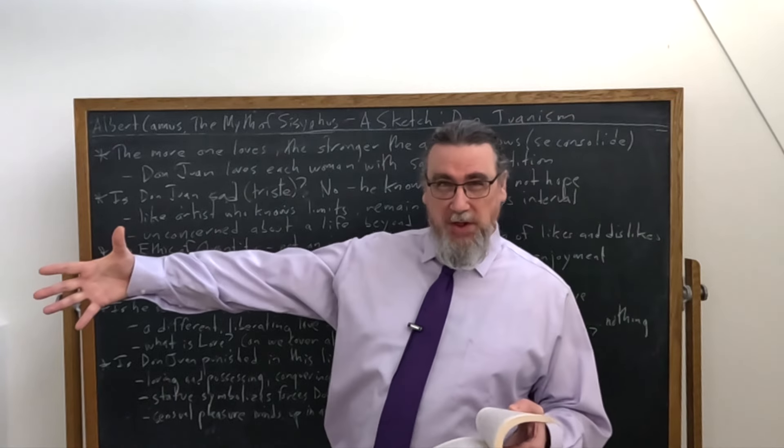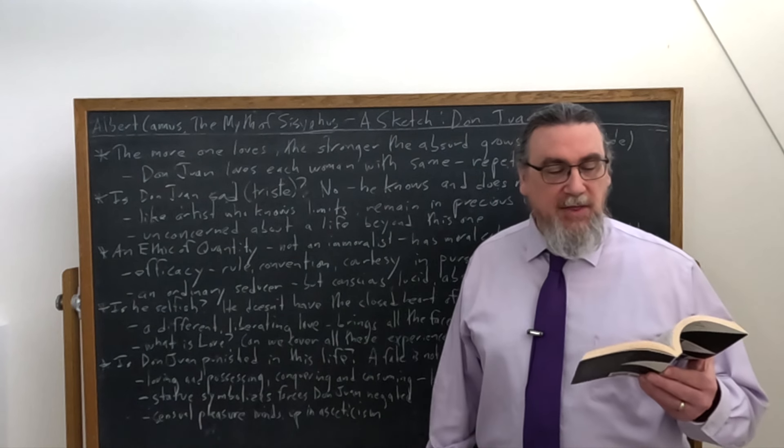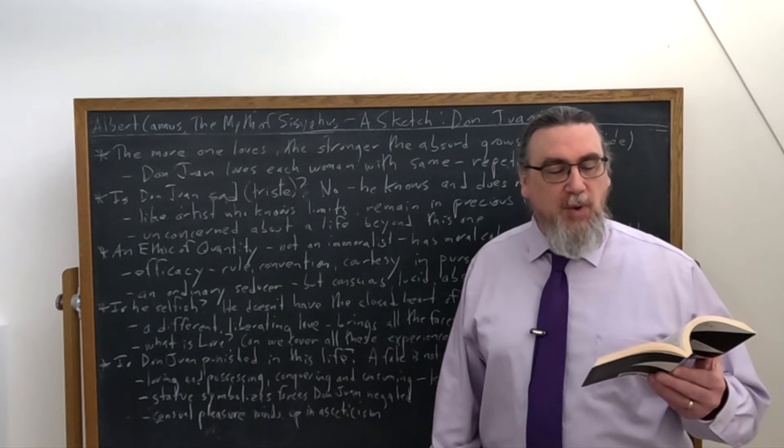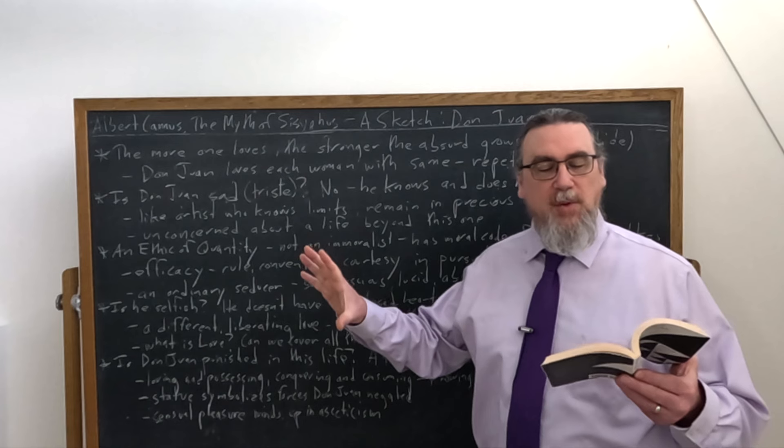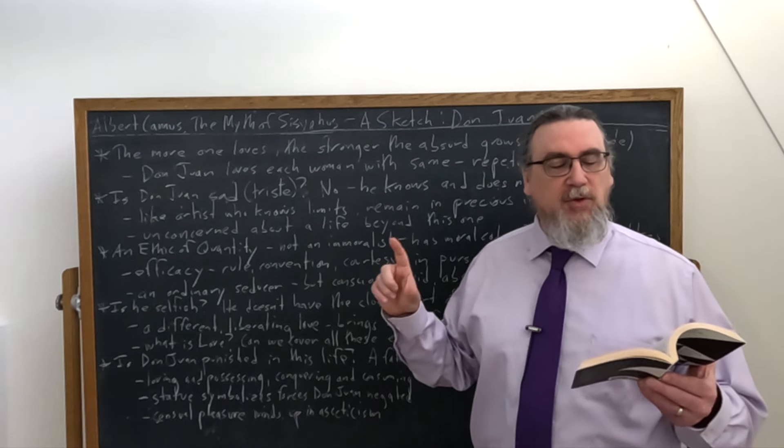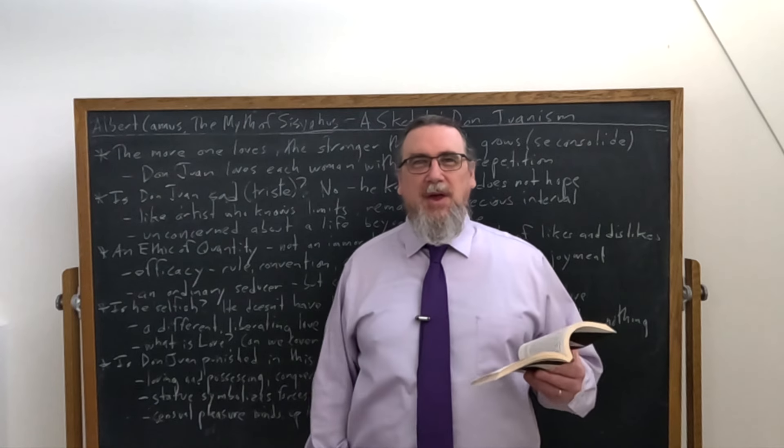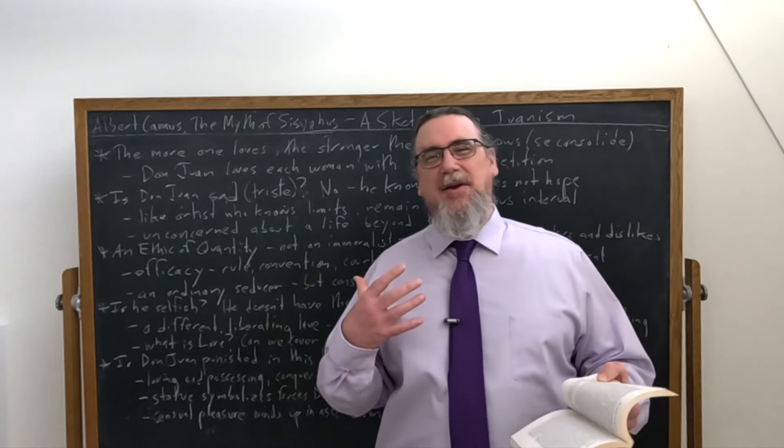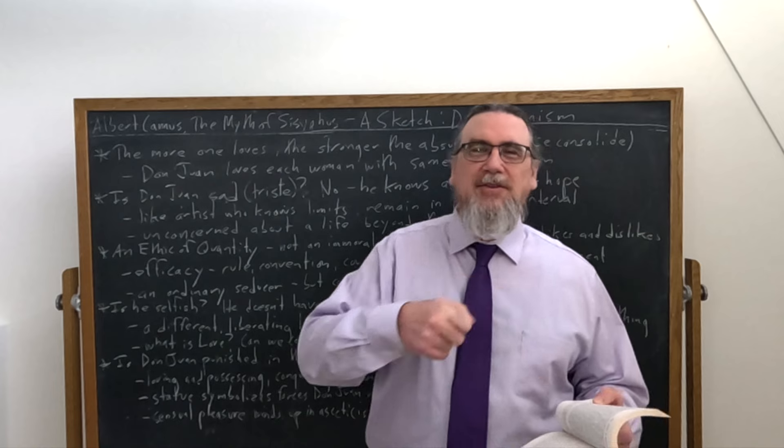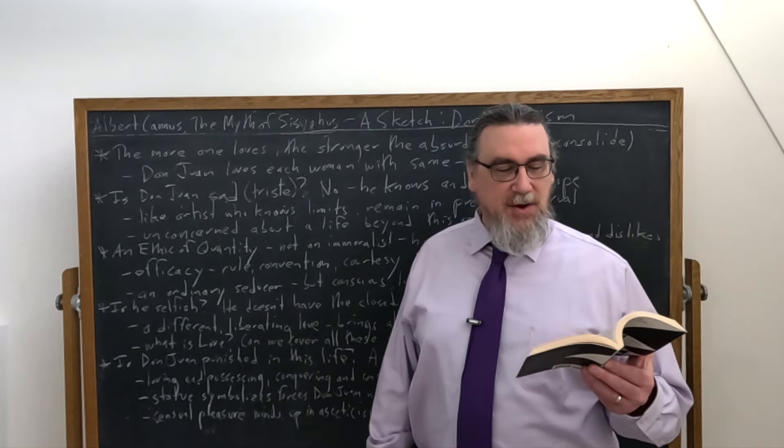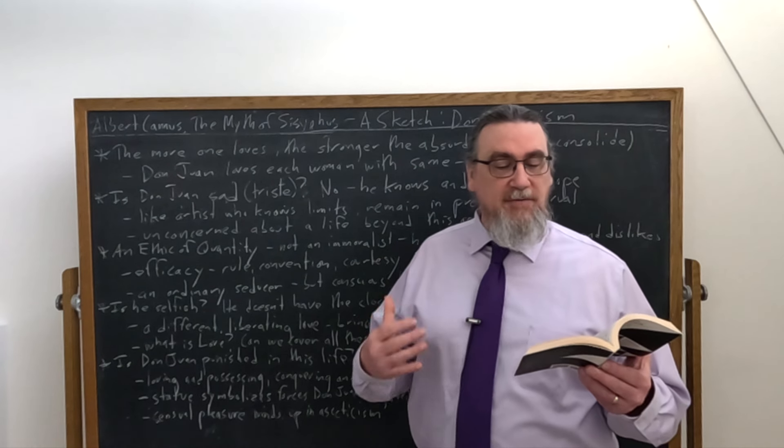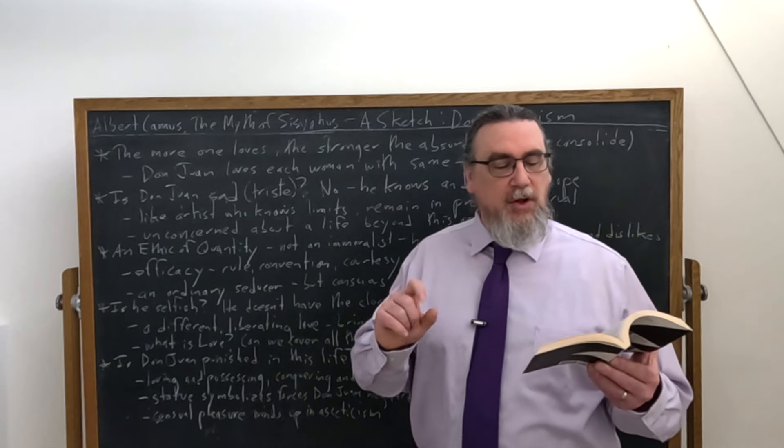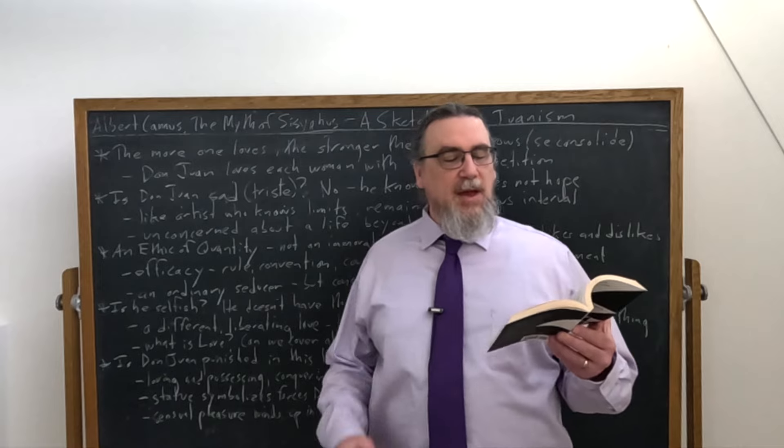And then he talks about people who do commit themselves to one great love in their life. So he talks about the cases of a mother or a passionate wife. And he says, there's actually selfishness there as well. They seem to be totally devoted to the other, but that's not really the case. He says that Don Juan knows just as well that those who turn away from all personal life through a great love enrich themselves, perhaps, but certainly impoverish those their love has chosen. Sacrificing yourself for the other, not being, you could say, properly selfish is actually, in some respects, bad for the other. And so he says, a mother or passionate wife necessarily has a closed heart. Why? Because it is turned away from the world, a single emotion, a single creature, a single face, but all is devoured.